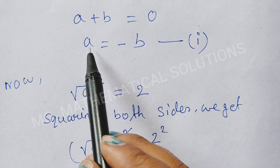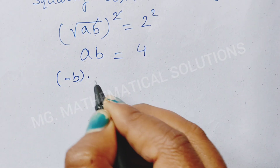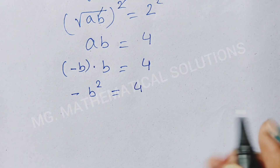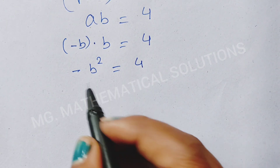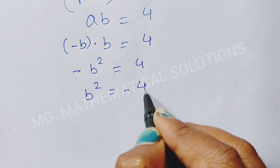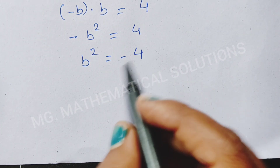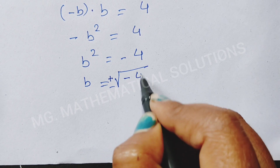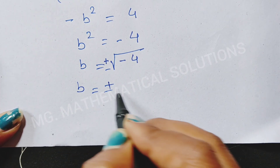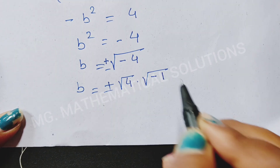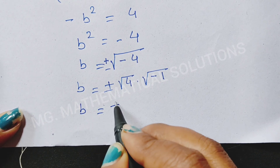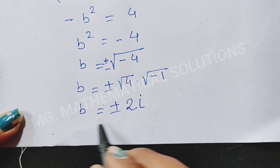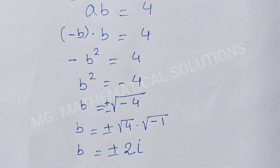Now we put a equal to minus b. So minus b times b equal to 4, meaning minus b squared equal to 4. We multiply by minus 1, so b squared equal to minus 4. Removing the square by taking the square root: b equal to plus or minus root of minus 4, which equals plus or minus root 4 times root of minus 1, so b equal to plus or minus 2 iota.